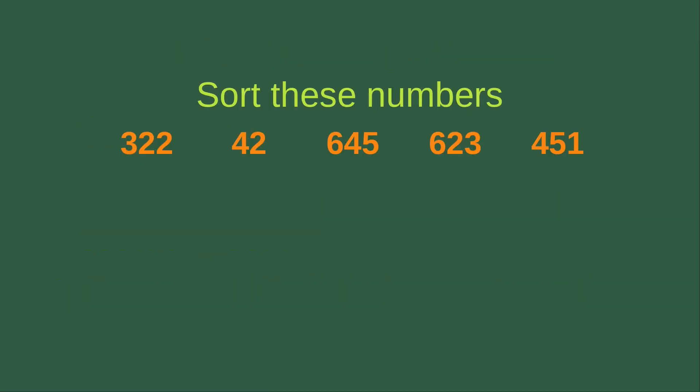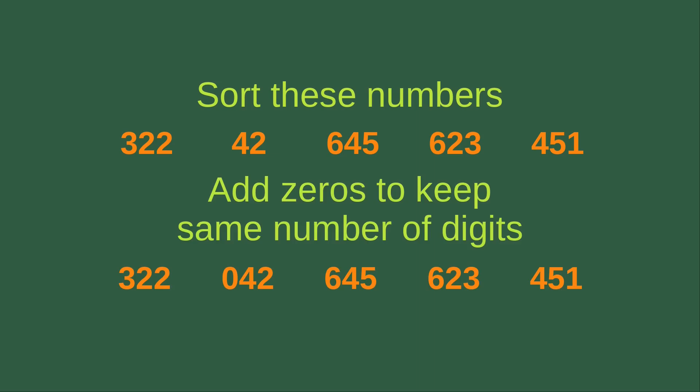Suppose we have such an example. We need to sort these five numbers from smallest to largest. The first thing to do before the sorting begins is that we have to add zeros to keep the same number of digits for all the numbers. So you can see that 42 has to include a zero beforehand, so that every number has exactly three digits, which are the same for all the numbers.